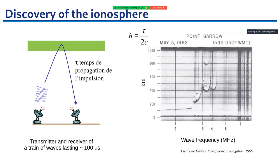How do we measure the ionosphere? This kind of plot is called an ionogram. By transmitting a train of waves at different frequencies, we get reflections from the ionosphere and can estimate its altitude. The y-axis is the altitude as a function of wave frequency. Most reflections are between 400 and 600 kilometers, which is the altitude of Earth's ionosphere.